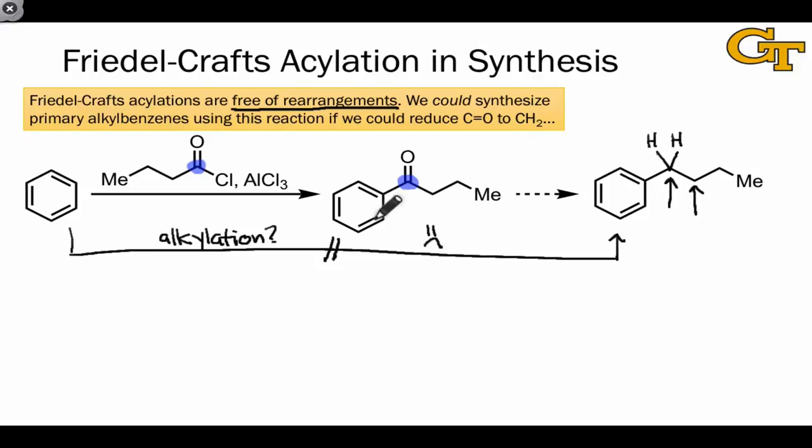And so alkylation won't work here, but this two-step acylation followed by reduction will work fine. The key really is just figuring out what reduction conditions can actually lead to this transformation of the carbonyl group into a CH2 group.